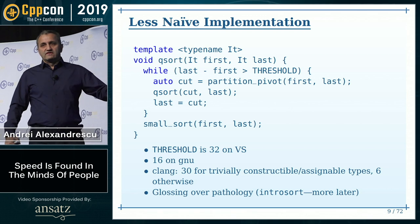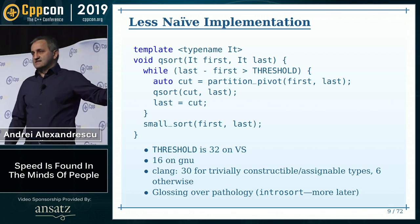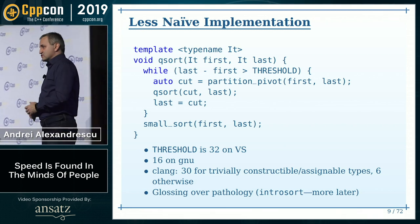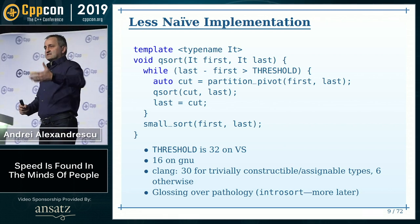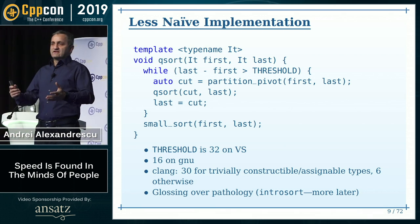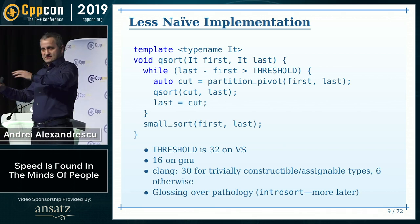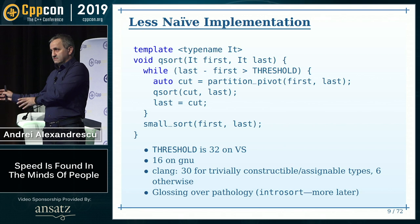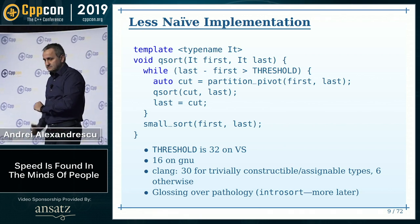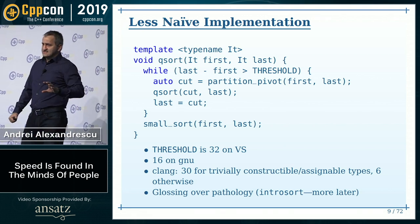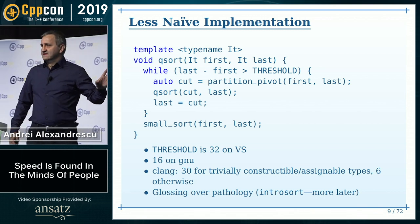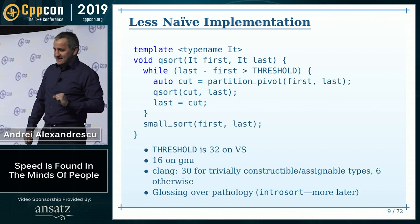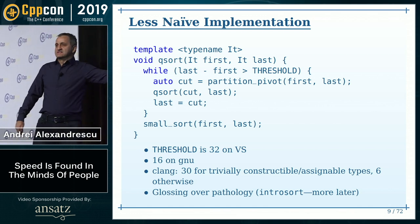For now, we'll gloss over the pathological cases whenever Quicksort becomes quadratic. There's a meta-algorithm called Introsort that monitors Quicksort performance, and whenever things go bad, it throws everything out and falls back to Heapsort. These pathological cases never come up except when they do — and we're going to see one. The implementation we have right now is decent, let's say.